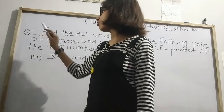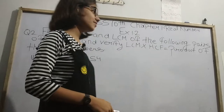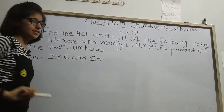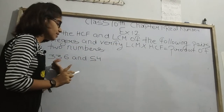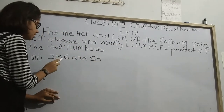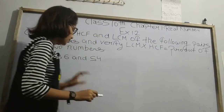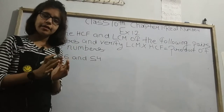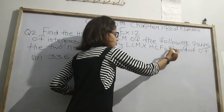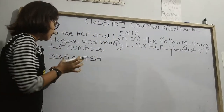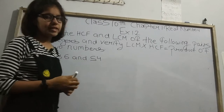In Exercise 1.2, we will cover question number 2nd, 3rd, and the last question. Our question is: find the HCF and LCM of the following pairs of integers — that is 336 and 54. Then verify that LCM × HCF equals the product of the two numbers, meaning 336 × 54. So let's start.